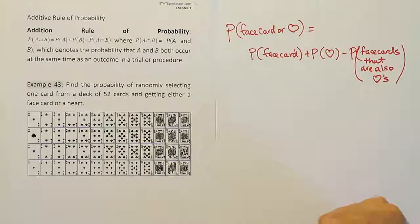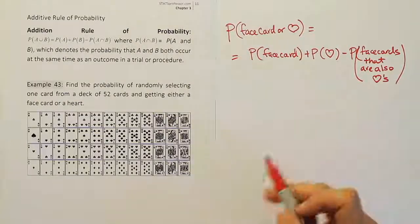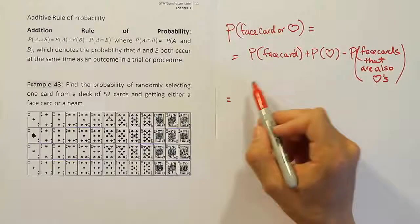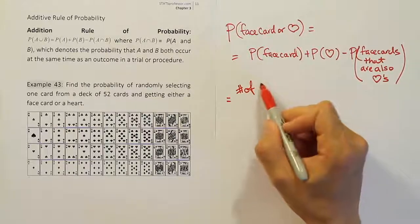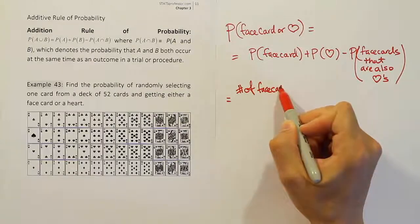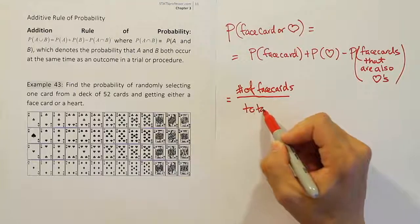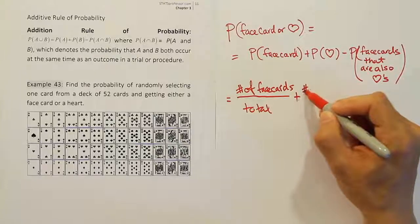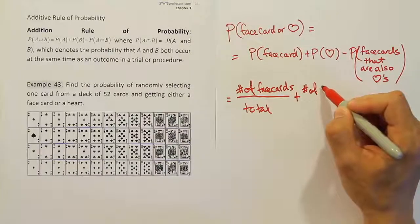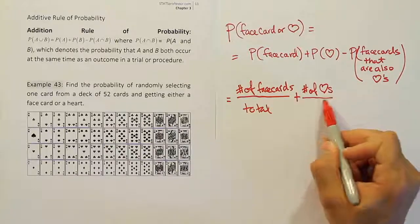So let's go ahead then and break down each of these phrases into basic probabilities. Because keep in mind that these are still just basic probabilities. So this one is going to become the number of face cards over the total number of cards. So I'll just say total for short. Plus, what's this one become? Well it becomes the number of hearts. Number of hearts.